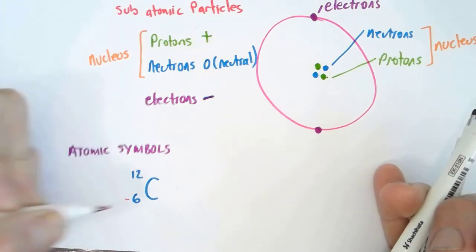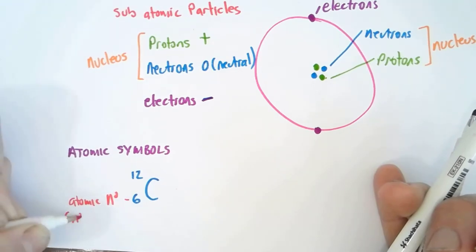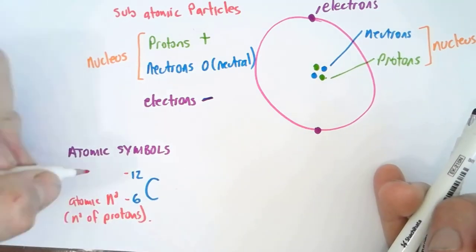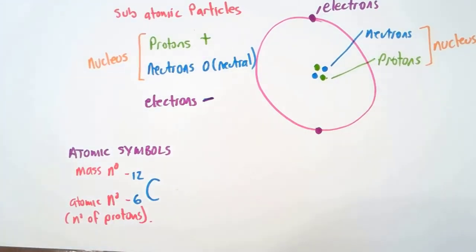So this is what we call the atomic number, and it tells us the number of protons. And this other number is what we call the mass number, which is the number of protons plus the number of neutrons.